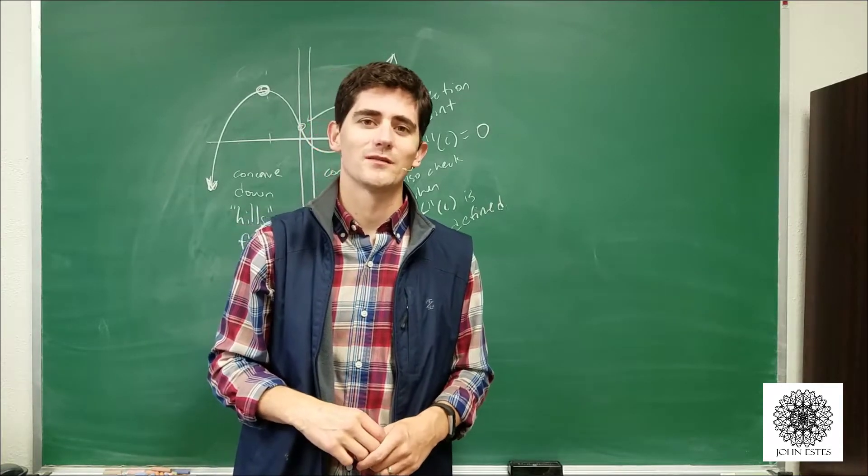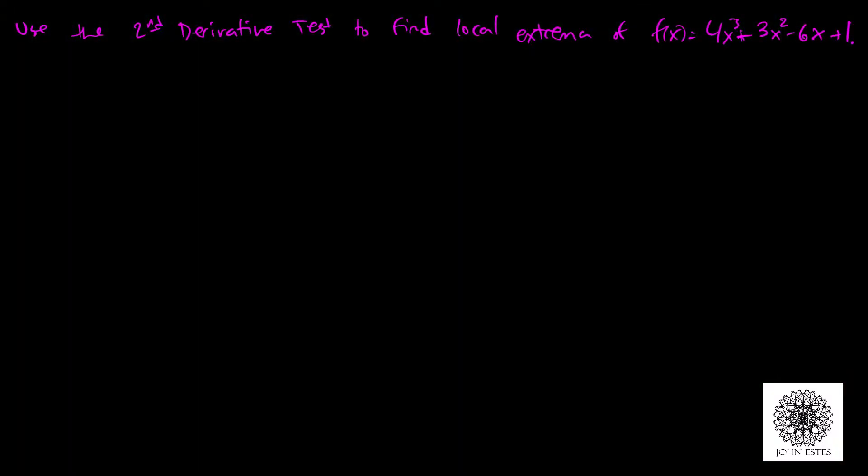the first. I'll show you an example of how this works. Now to continue our discussion, we want to use the second derivative test to find local extrema of f(x) = 4x³ + 3x² - 6x + 1. We've actually already done all of this work in